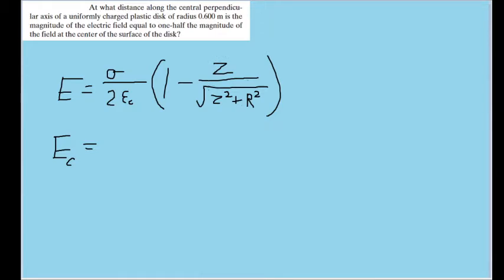then this whole term becomes zero, so it ends up just becoming this first term times 1. So the electric field at the center of the disc is just equal to the surface charge density divided by 2 epsilon naught.